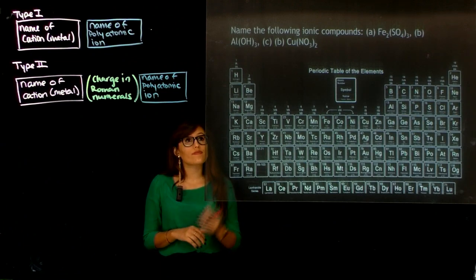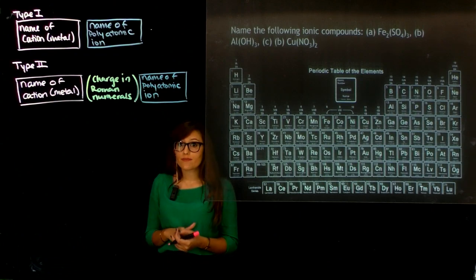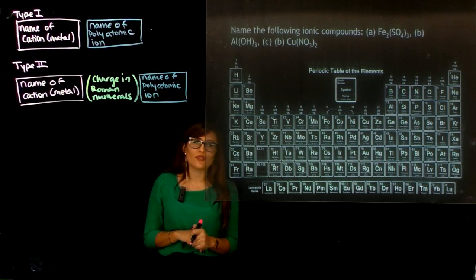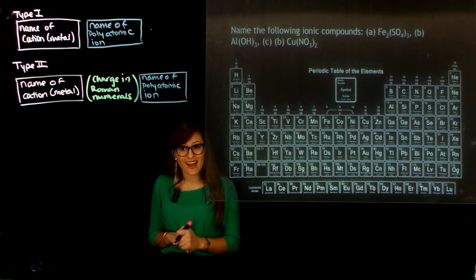Hello and welcome back. The following problem states: name the following ionic compounds. However, these ionic compounds are slightly different from before because they all contain polyatomic anions.